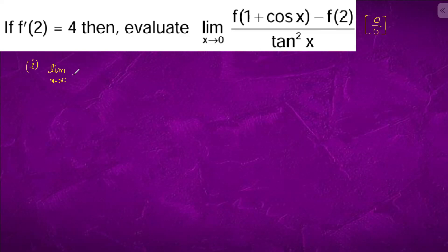So what we will do is differentiate the numerator. It will come out to f dash(1 + cos x) and the derivative of cos x is minus sin x. And the denominator is 2 tan x, whose derivative is 2 sec square x.